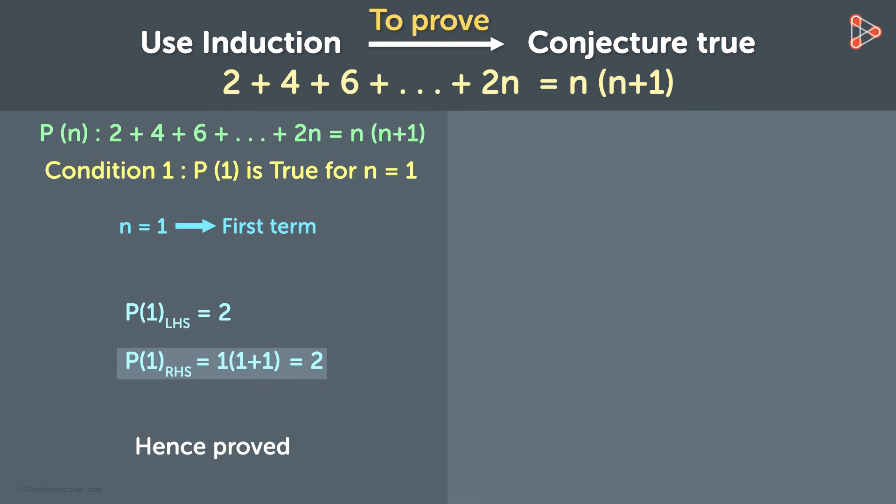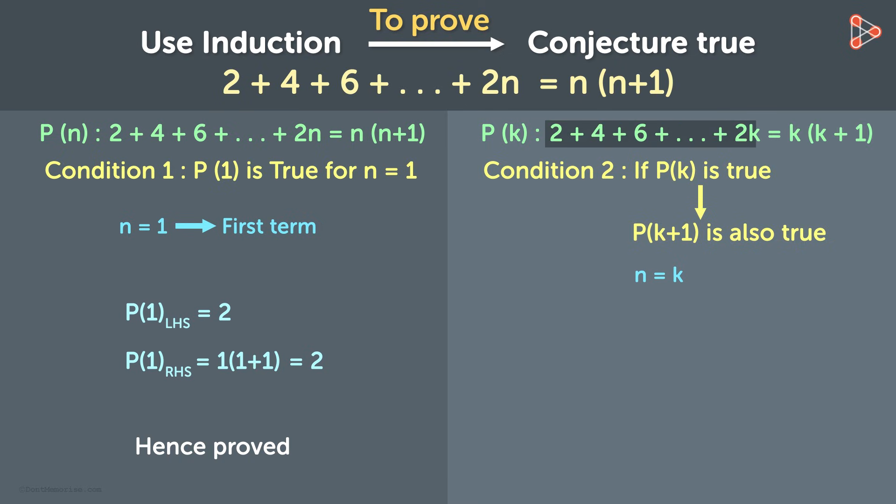Now for the second one. For the second condition, we first assume that n is equal to k. So what will P of k be equal to? P of k is 2 plus 4 plus 6 up to 2k is equal to k multiplied by k plus 1. Based on that assumption, we have to prove that the statement is also true for the k plus 1 case.